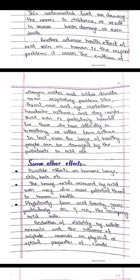Some other effects include possible damage to human lungs, skin, and hair. The heavy metals released by acid rain may also pose a potential threat to human health. Phytotoxicity from acid-forming gases, particularly sulfur dioxide and nitrogen dioxide, accompanies acid rain. There is also reduction of visibility by sulfate aerosols and the influence of sulfate aerosols on the physical or optical properties of clouds.